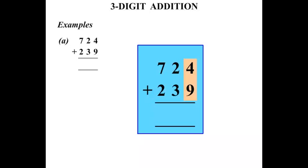So starting from the units. Okay, the right-hand side, the right-hand column. 4 plus 9 is 13. So we write our 3 down and carry the 1.